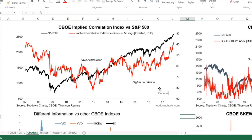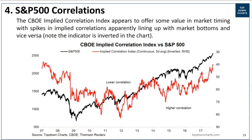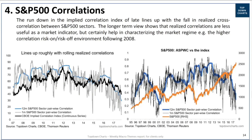Thinking about correlations in general, I also want to point out realized correlations. The implied correlation index deals with individual stocks, but for simplicity I've done this analysis on sector pairwise correlations - one month and 12 month rolling realized correlations on daily returns. You can see that the index shown in black really does move in line with realized correlations, which you'd expect - just as implied volatility moves with realized volatility.